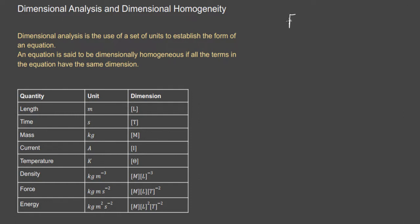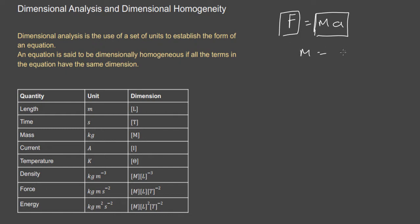For example, force equals mass times acceleration. Can we say the dimension of both sides is the same? If they don't have the same dimension, this equation would not be correct. First, what is a dimension? Dimension is like units — it's the way you express units of each term. If I ask the unit of mass, you say kilogram; for acceleration, you say meter per second squared.